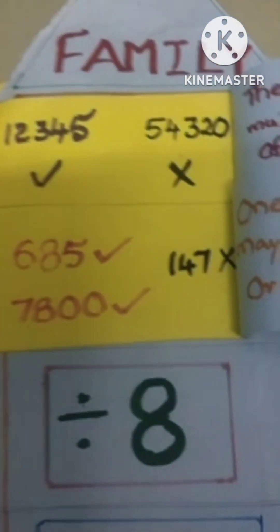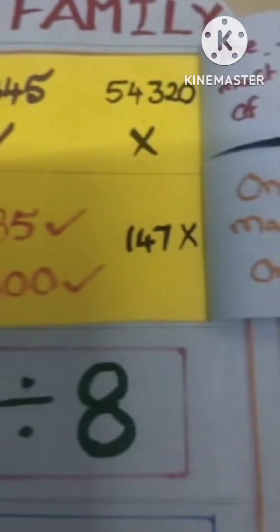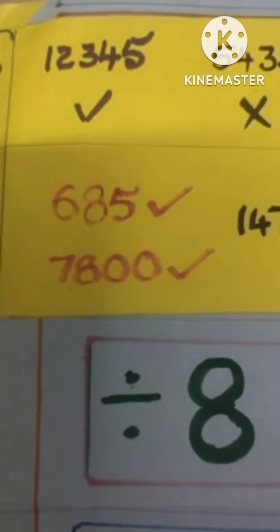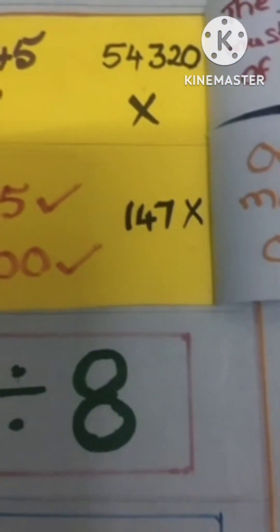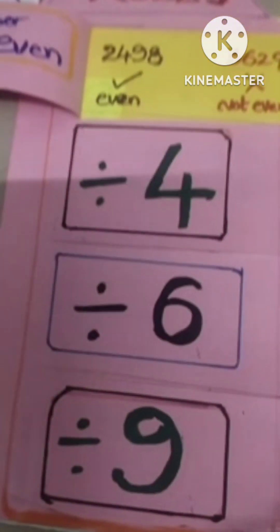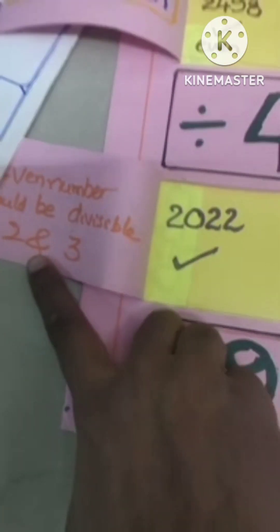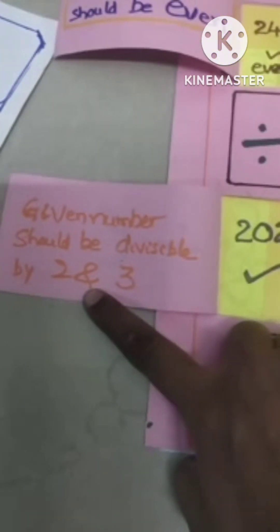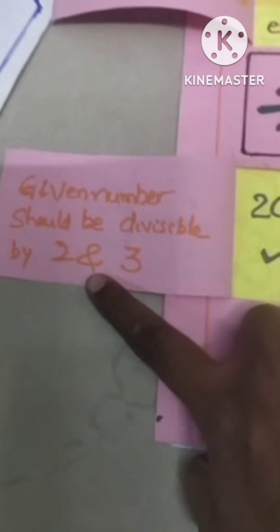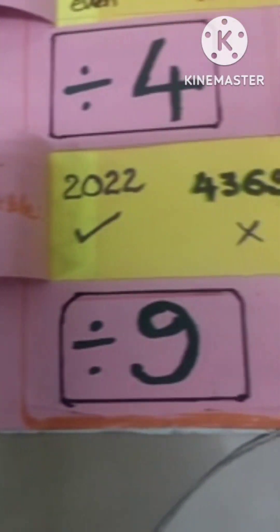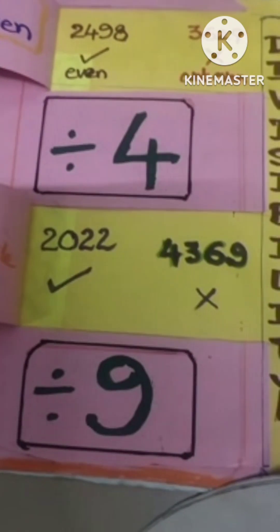Divisibility rule for five: the ones place must be either zero or five for the number to be divisible by five. Let us check — 685 is divisible, but 147 is not divisible. Next, coming to divisibility rule six: the given number should be divisible by both two and three. Check those two numbers.